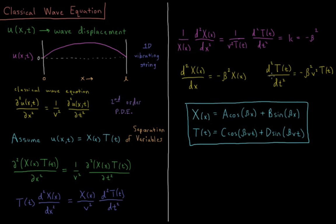Same thing with the t function, you can take its second derivative and see that it equals negative beta squared v squared times the function again. So this is the solution to the separation of variables for the general classical wave equation in one dimension. And in the next video, we're going to apply this specifically to the case of a one-dimensional vibrating string.